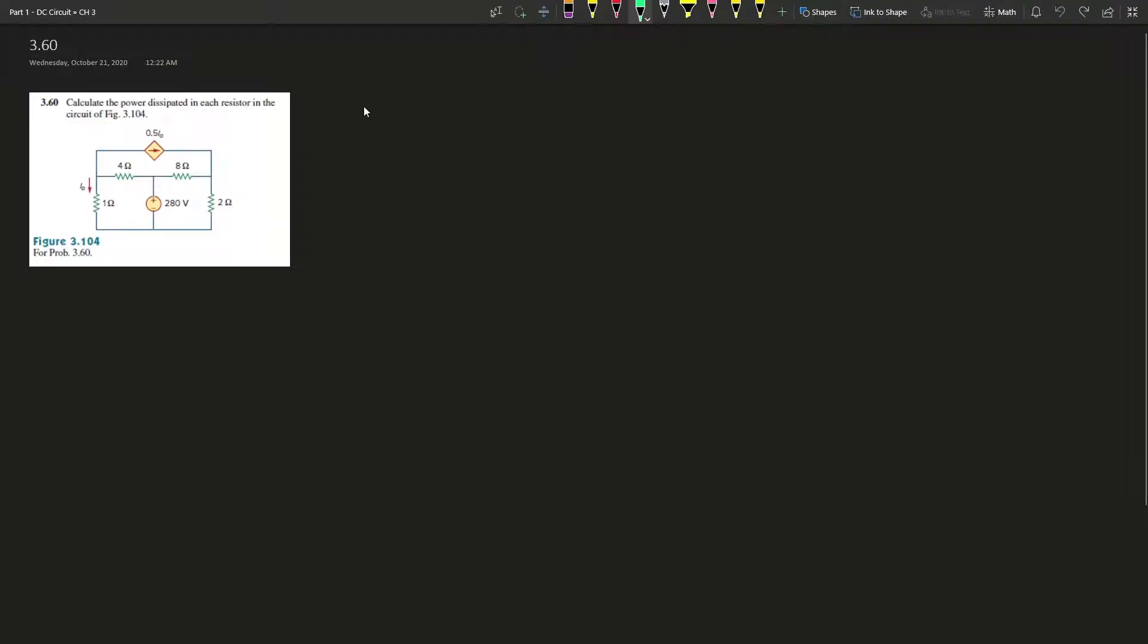All right, so problem 3.60 says calculate the power dissipated in each resistor in the circuit figure. I'll be using the mesh analysis method to solve this problem.